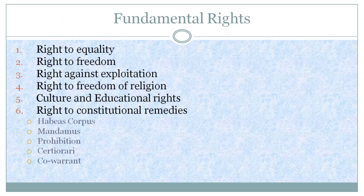Fundamental Rights provide the social and political atmosphere necessary for the development of the personality of citizens. They are required for a person to lead a civilized life in society and are also essential for the success of a democracy. There were seven fundamental rights mentioned in the third part of our Constitution. However, after the 44th Amendment, the right to property has been abolished. There are six fundamental rights at present.